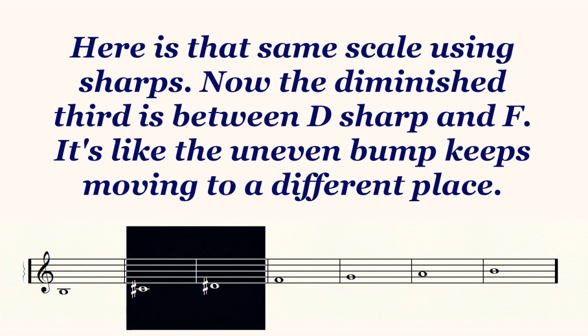Now let's look at that same scale using sharps. Now the diminished third is between D sharp and F. It's like the uneven bump keeps moving to a different place.